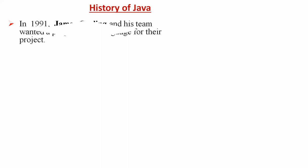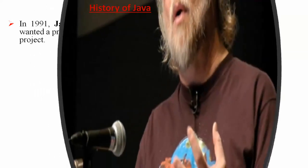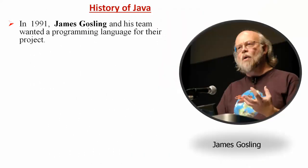In the year 1991, James Gosling and his team wanted a programming language for their project. James Gosling was a software programmer who was at Sun Microsystems, which is located in USA.